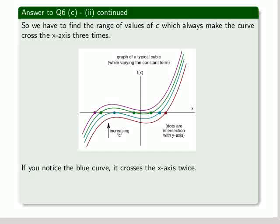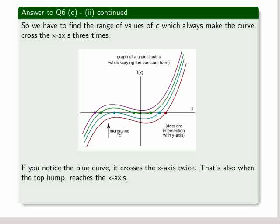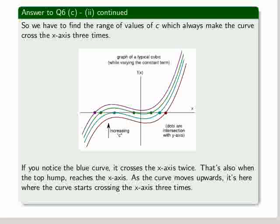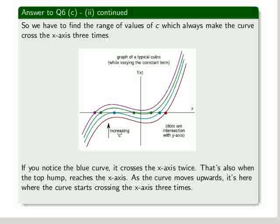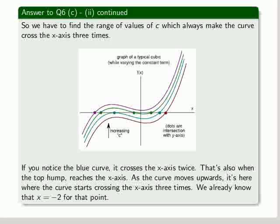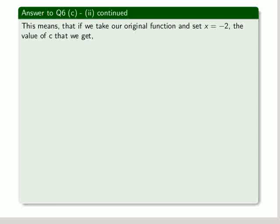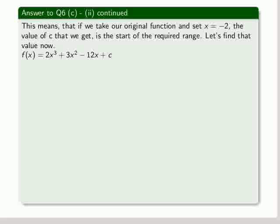If you notice the blue curve, it crosses the x-axis twice. That's also when the top hump reaches the x-axis. As the curve moves upwards, it's here where the curve starts crossing the x-axis three times. We already know that x equals minus 2 for that point. This means that if we take our original function and set x equals minus 2, the value of c that we get is the start of the required range.